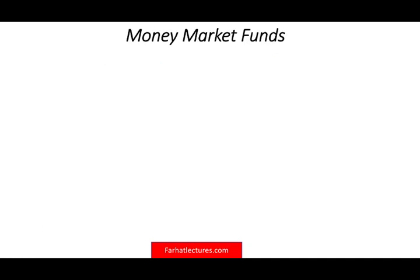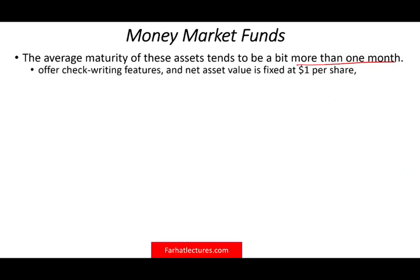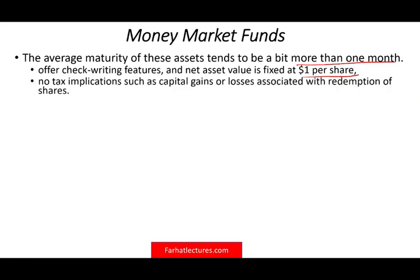There are many types of mutual funds. We're going to talk about first money market funds. These funds have an average maturity of a little bit more than a month, and basically they offer check writing features. So if you have a money market fund, you might be able to write a check against those funds. The net asset value is fixed at a dollar, so if you have one unit or one share, it's equal to a dollar. Generally speaking, they have an NAV of a dollar, which means there's no tax implication — no capital gains or capital losses associated with redeeming. So if you sell your money market mutual fund, you should not have a gain or a loss.